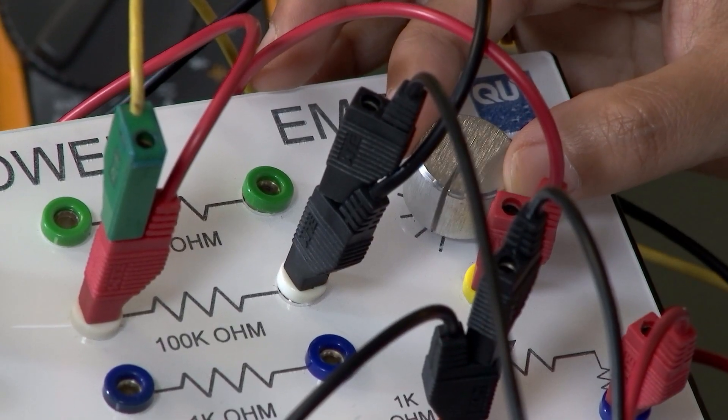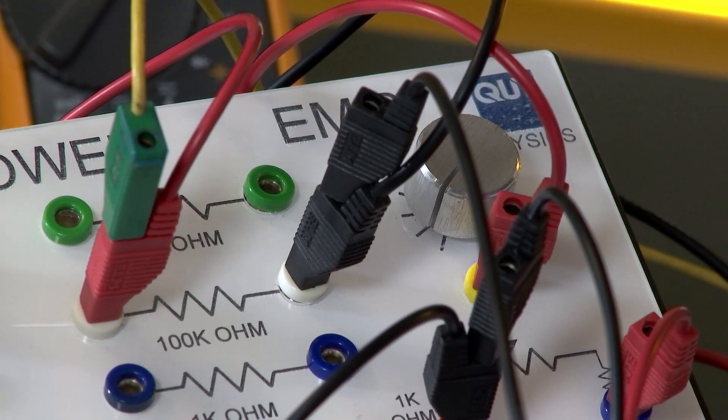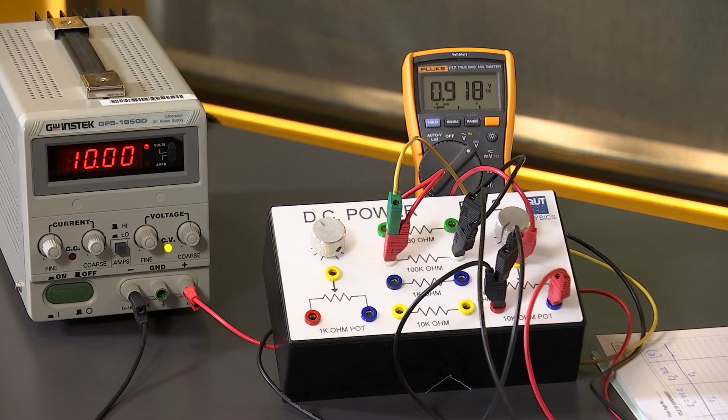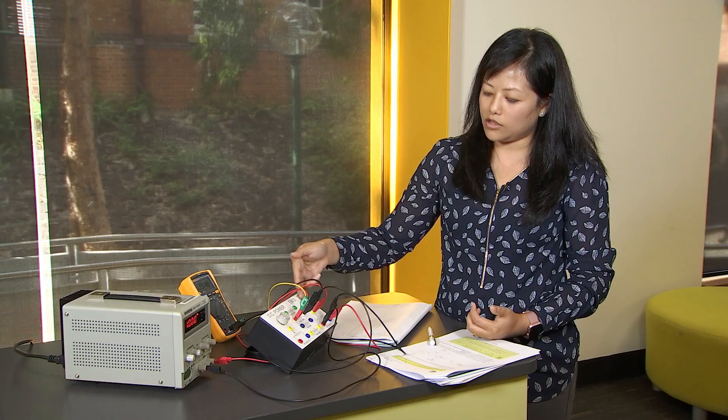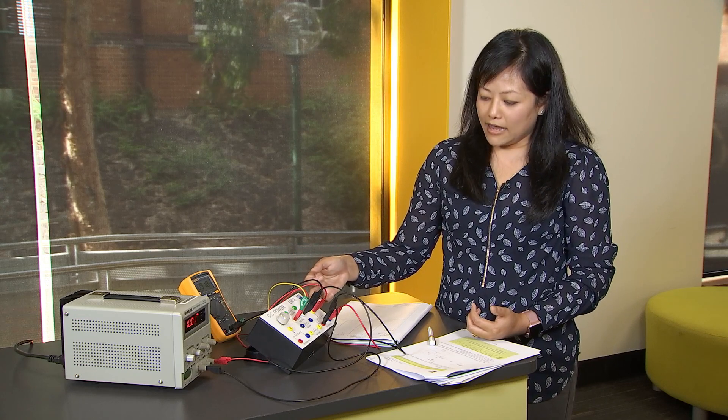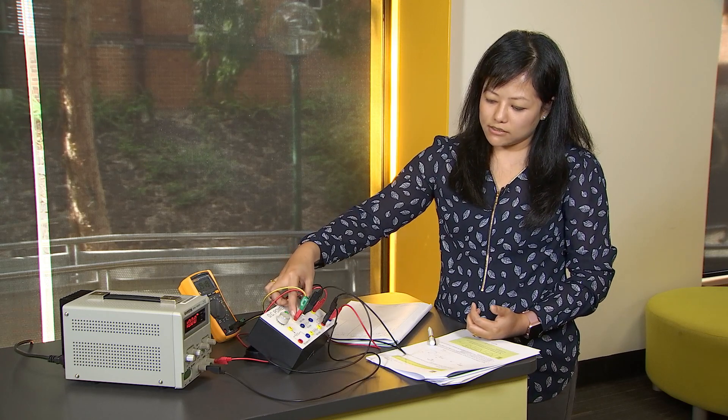Then we move to the next marking and measure and record the voltage: 0.918 volts. We do this for all the markings till we reach the end, and we next change our load resistance.